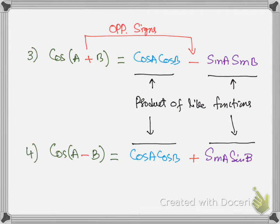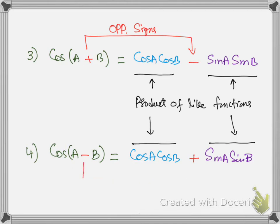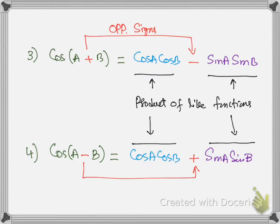For the cosine formula, we have opposite signs: when we have plus here, this sign will be negative, and when we have negative here, this sign will be positive. The product of the functions will be like functions — cos times cos and sine times sine — so cos(A)cos(B) then sine(A)sine(B). In the cosine formula the signs are opposite, whereas the product of the functions are like functions.